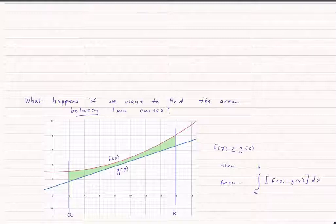Well, as long as f of x is greater than or equal to g of x, then the area is going to be given, just like before, from a to b the integral, but now it's going to be f of x minus g of x dx.